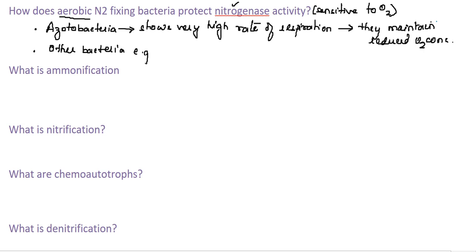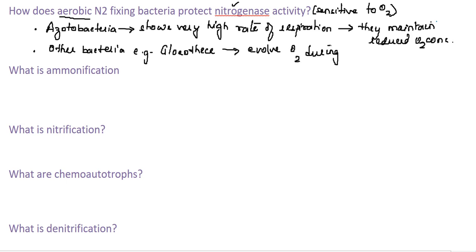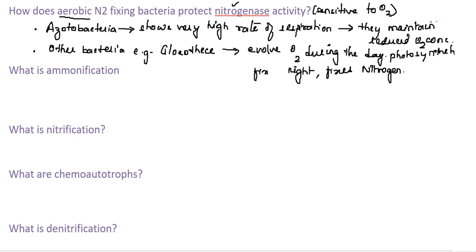Other bacteria, for example Gloeothece, have evolved in such a beautiful way that they evolve oxygen during the day by the process of photosynthesis, and during the night time they fix nitrogen. See how nature has evolved these organisms — they evolve oxygen during the day photosynthetically, and fix nitrogen during the night time.